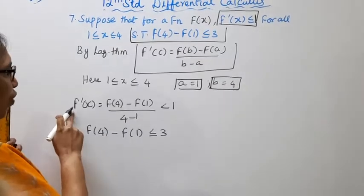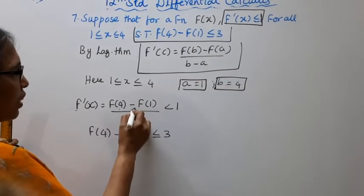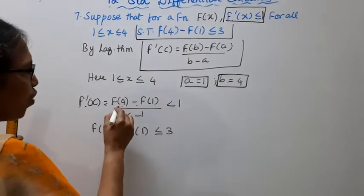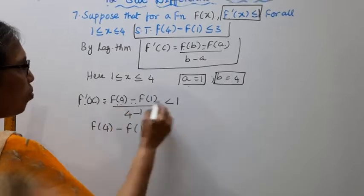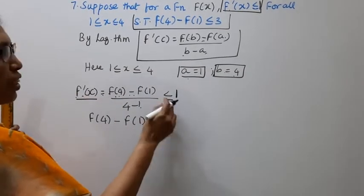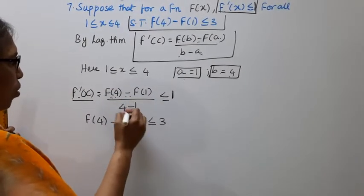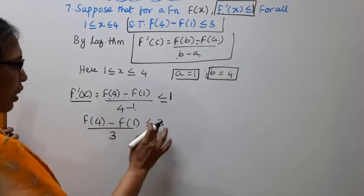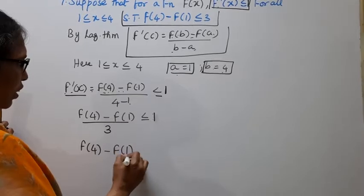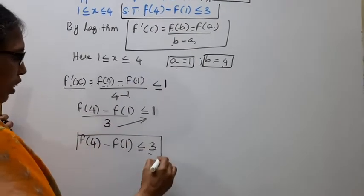Applying this: f'(x) is less than or equal to 1, so f(4) minus f(1) by 3 is less than or equal to 1. Therefore, f(4) minus f(1) is less than or equal to 3 by cross multiplying. So f(4) minus f(1) less than or equal to 3 is proved.